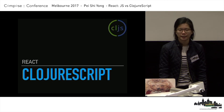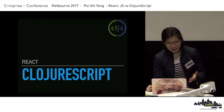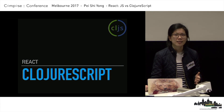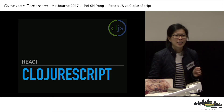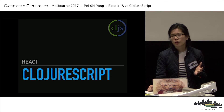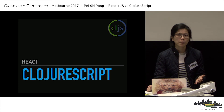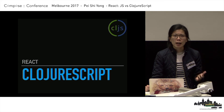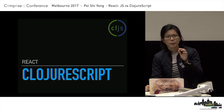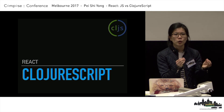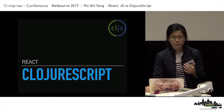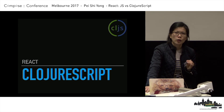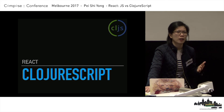ClojureScript with React — there are lots of good things. All the functional good bits you get are excellent. But it also has some downsides. ClojureScript has a much smaller community compared to JavaScript, which means documentation can be lagging and you might not find the library you need. Luckily, it's quite easy to port any JavaScript library into ClojureScript. But having a small community also means you often can't Stack Overflow your way to a solution, because you might be the first one facing that problem.